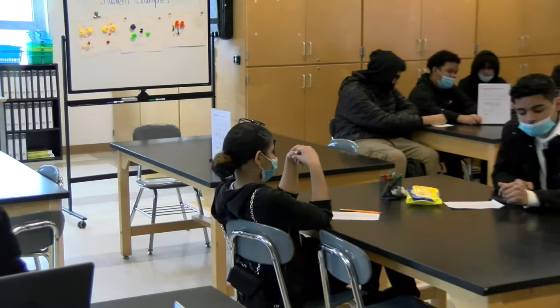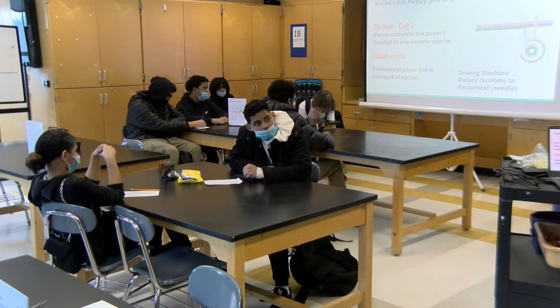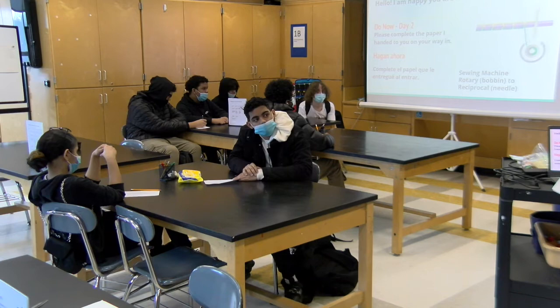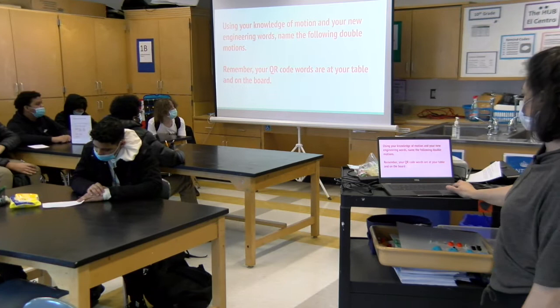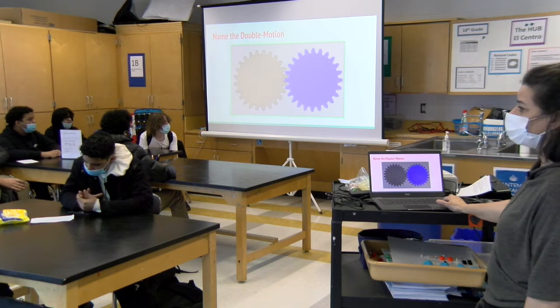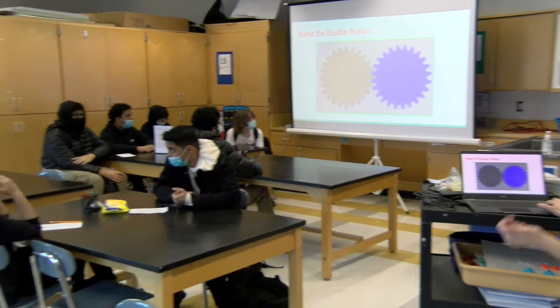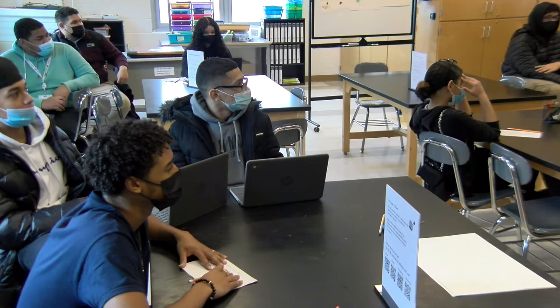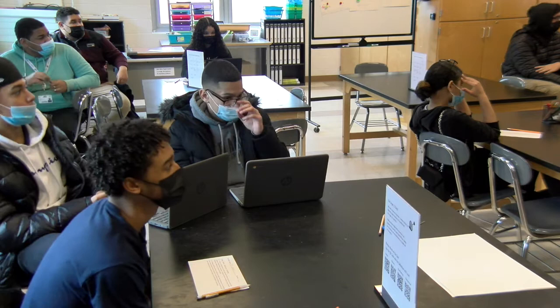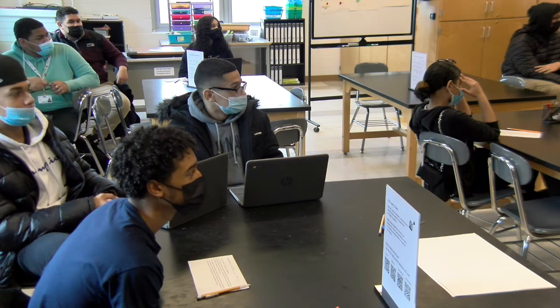By the end of today, I want you to think about something real in this world that has more than one motion. In a minute you'll see how it ties into the lesson. Name the double motion — there are two motions there. Rotating? Yes, rotating to what? To the right. And what's the other gear doing? Left. What's the motion both of them have? Rotating. So we can say rotating to rotating.